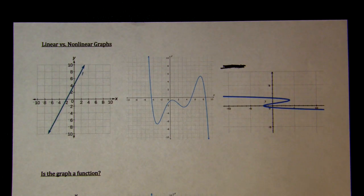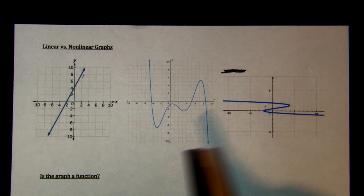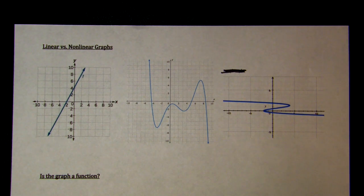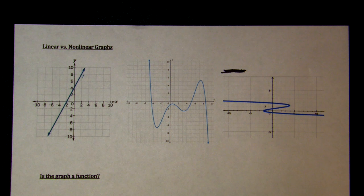Looking at graphs, how can we tell if they're linear or non-linear? We have three graphs here — one, two, and three — and we are going to determine if they are linear. So what linear means: if you think of what linear is, we think of line.